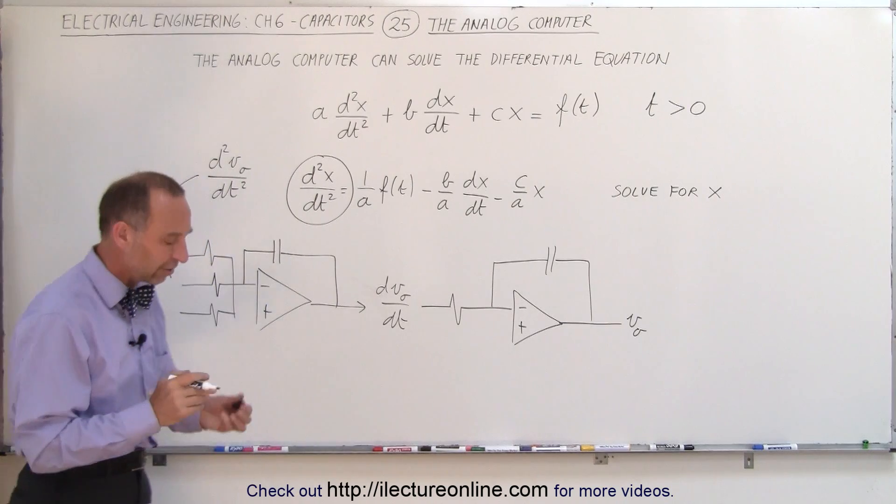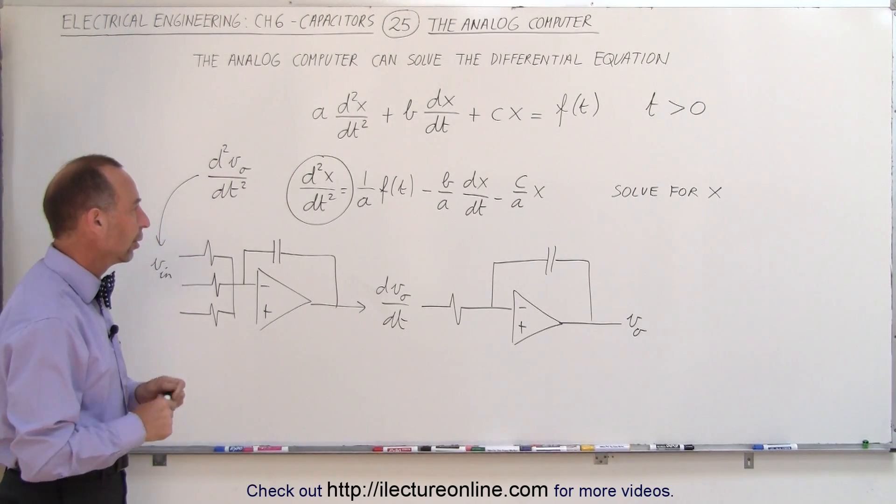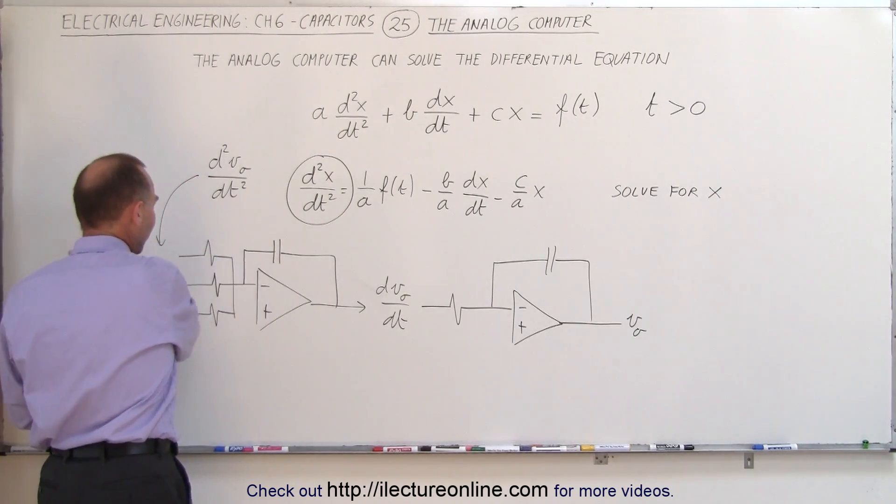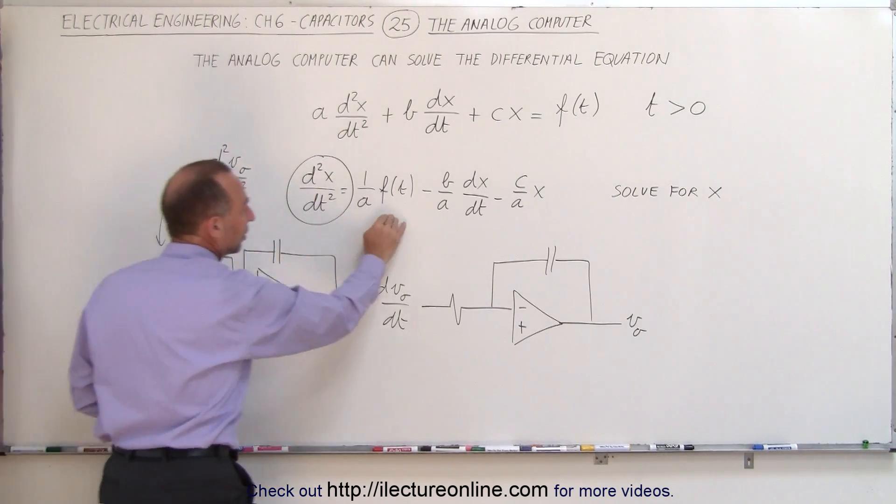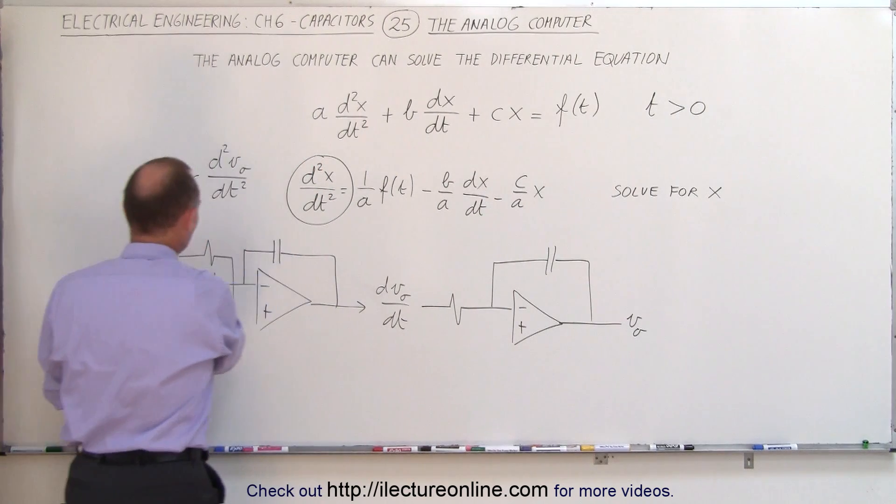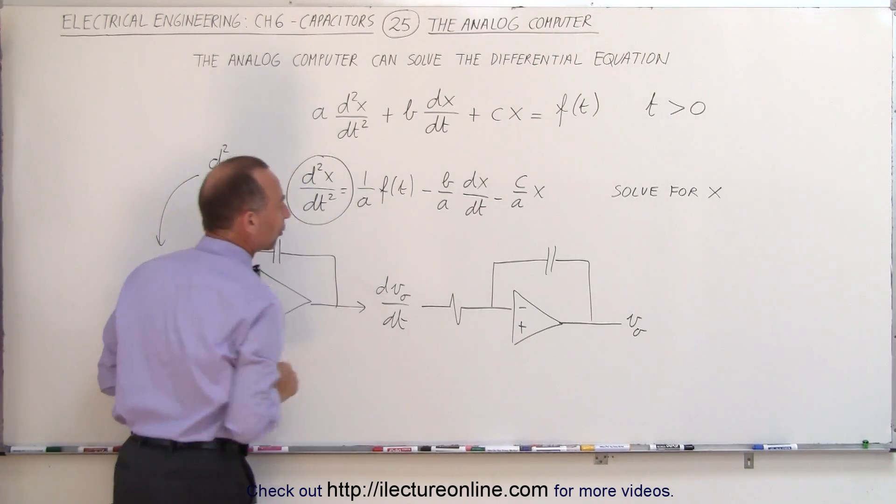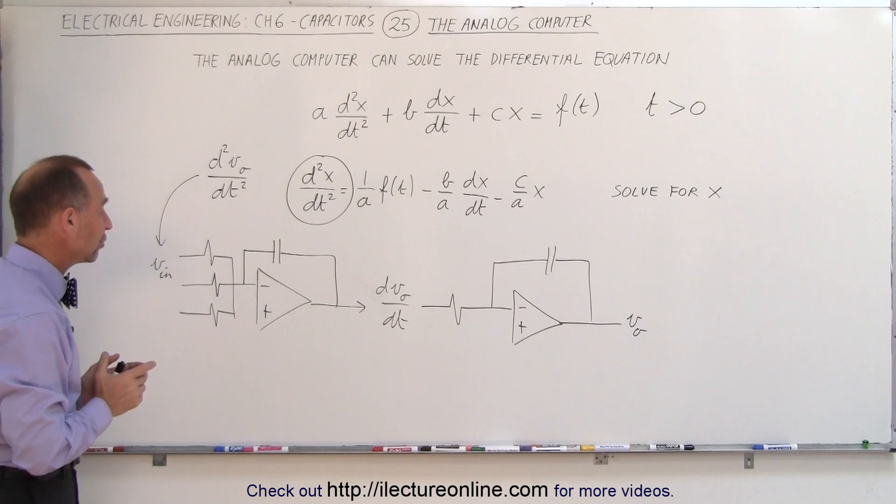So that's the general concept of an analog computer. We can use that to solve a differential equation by saying this is going to be fed in. Now, since this is equal to these three terms, we're going to feed the three terms in separately. We're going to adjust the size of the capacitor and the size of the resistors in such a way that we take care of these constants appropriately. And we'll show you an example of how to do that.